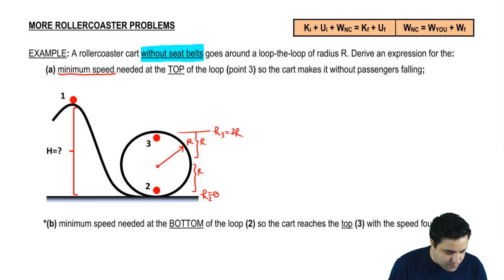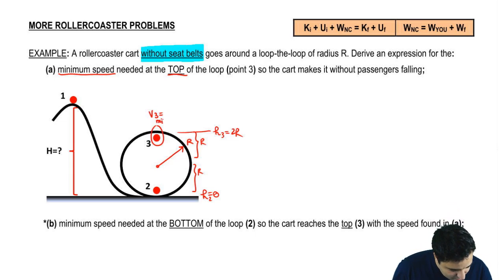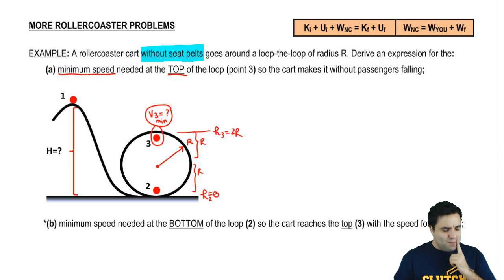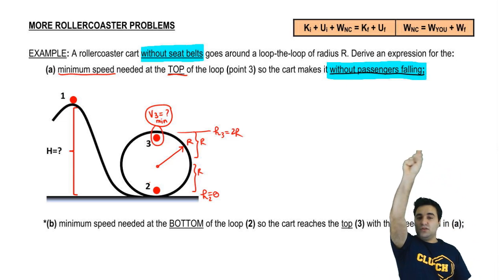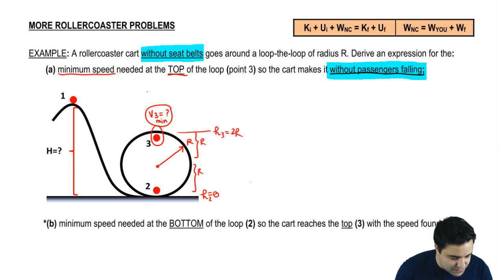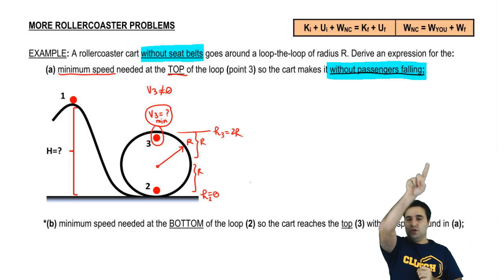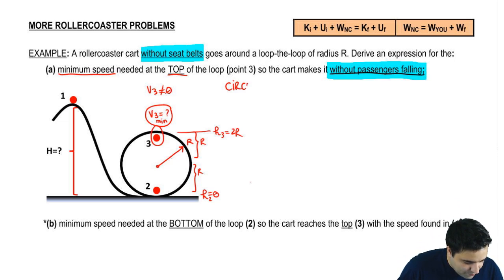For part A, I want to know the minimum speed needed at the top of the loop — V3 minimum — so that the cart makes it without passengers falling. If passengers had seatbelts, velocity at the top could be near 0. But because there are no seatbelts, V3 cannot be 0. Zero is too slow; you would fall even before you got to the top. Now, when we have a circular path, there are two ways of solving these problems: one point only uses F=ma centripetal, and two points uses the energy equation.